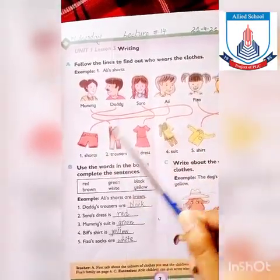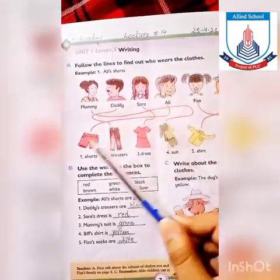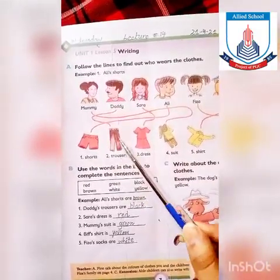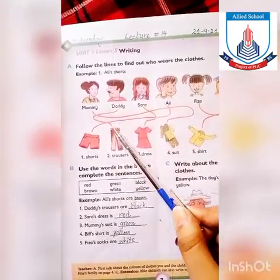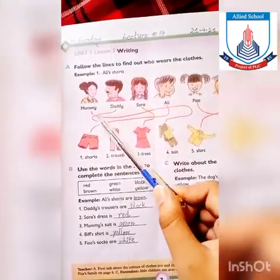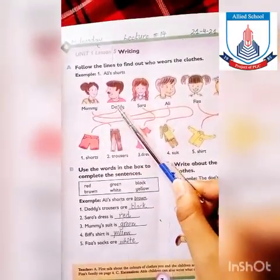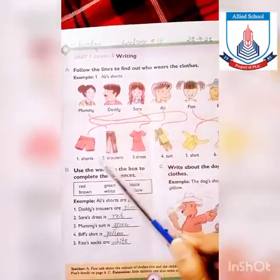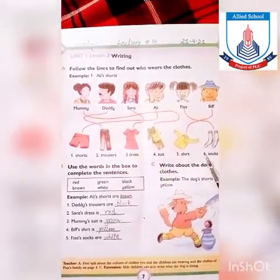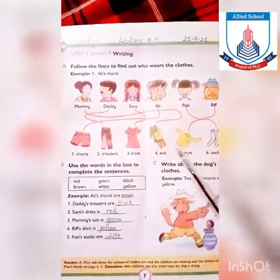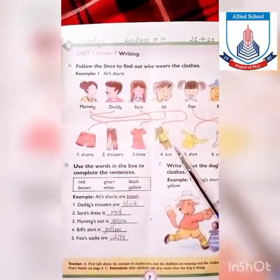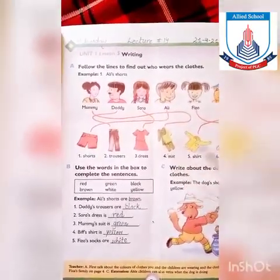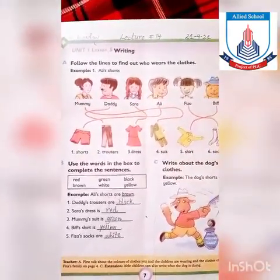Shorts پہ — Ali's shorts number two پہ ہے۔ Trousers — ہم Trousers کو دیکھیں گے۔ Daddy's Trousers۔ اسی طرح سے ہم نے باقی remaining بھی ایسے ہی کرنا ہے، اور اپنی note book پہ write کرنا ہے، اپنی note books open کریں۔